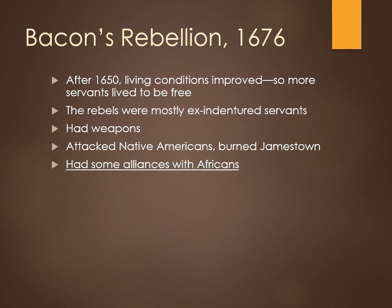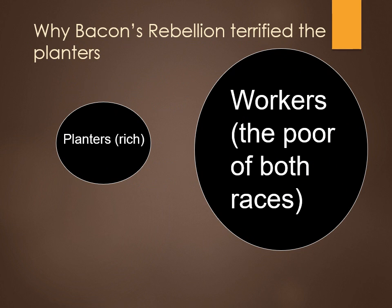Here is the key that especially terrified the planter class, the elites: these former indentured servants had some alliances with the relatively small number of Africans who were in Virginia. The planters were terrified of that. Why? If the poor of both races were to unite, they would form a large majority in relation to the planters. It would be a society divided by class — rich versus poor. This did not look like a very good way to organize society in the eyes of the planters.